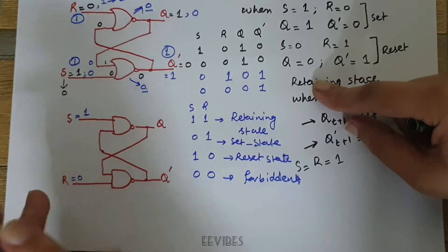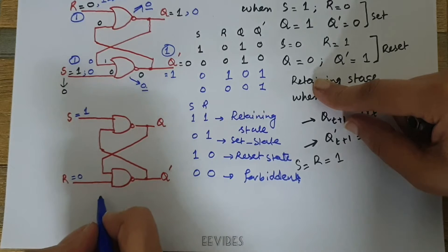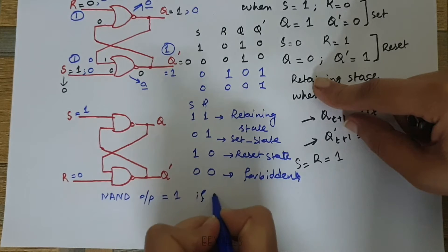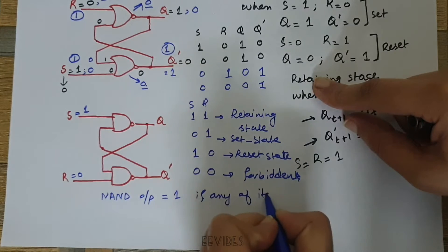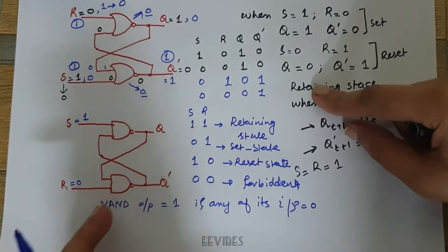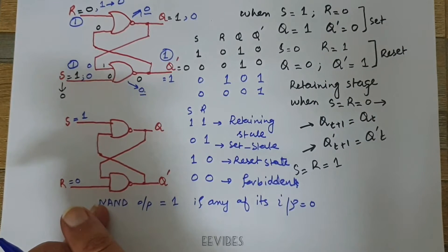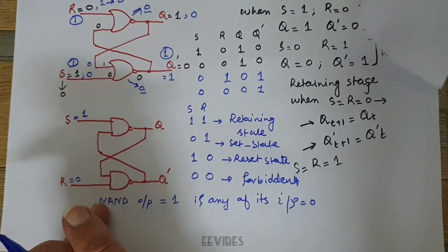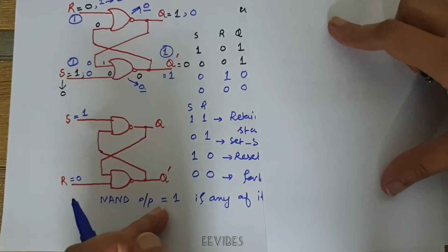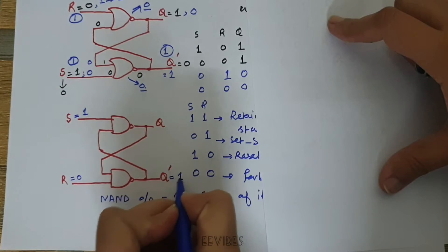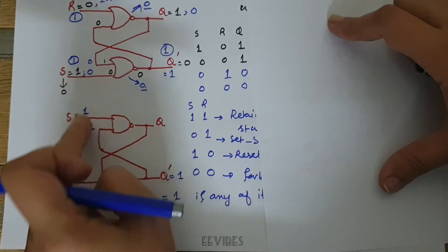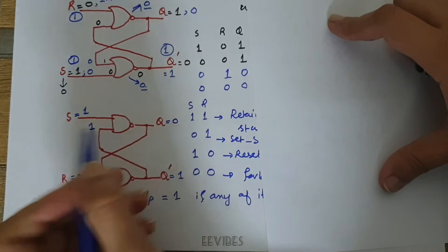Starting with S=1 and R=0, using the same theorem: the NAND output is equal to 1 if any of its inputs is equal to 0 or held at logic 0. Let's verify this operation. When we apply this logic, it will give us Q bar equal to 1, and this 1 is fed back on the upper NAND gate, making both its inputs equal to 1 and forcing its output equal to 0.